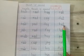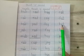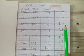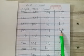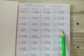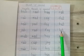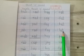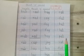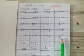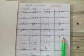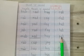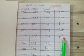H says H, O says O, T says T — Hot. L says L, O says O, T says T — Lot. P says P, O says O, T says T — Pot.